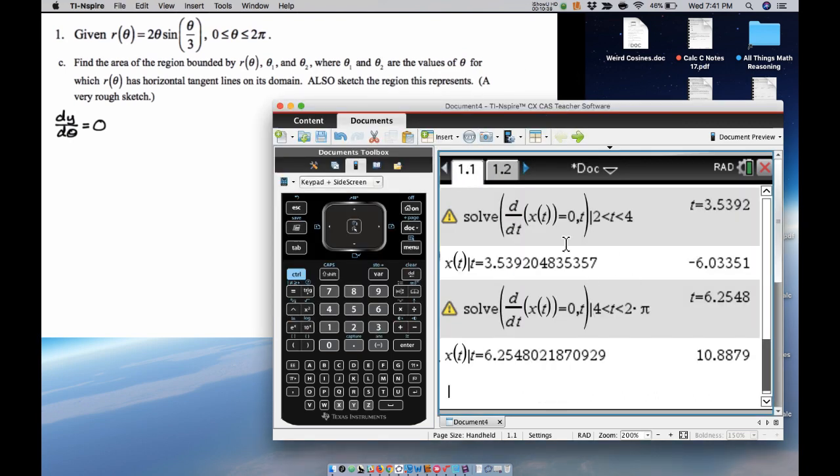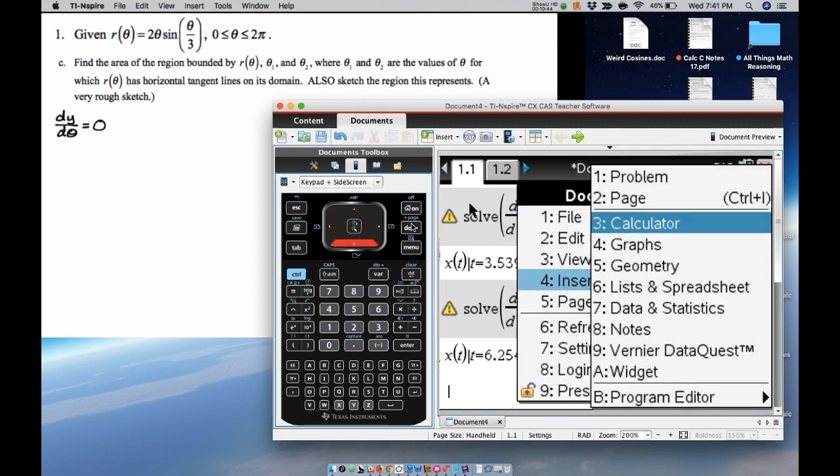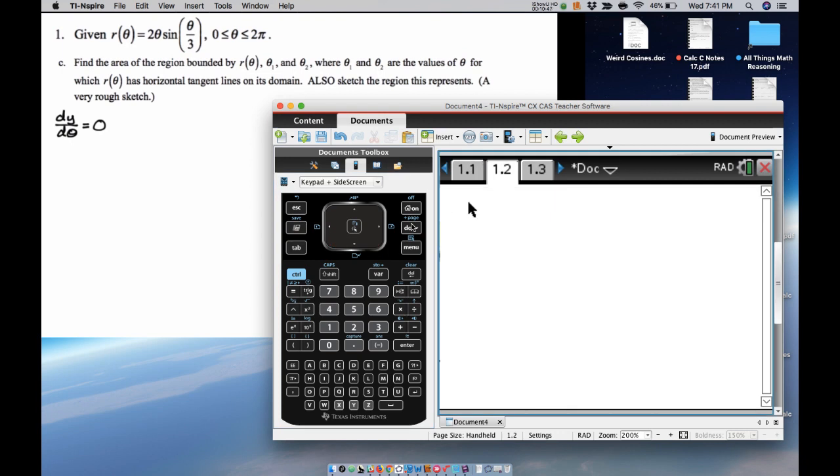And if dy/dθ equals 0, that's a calculator problem. So I'm going to go back here, and I'm going to add another calculator page. I want to solve, I want dy/dθ, so that's the derivative with respect to t of y(t). When does that equal 0? Solve for t, and then my interval is 0 < t < 2π. So let's see what we get. All right, we have that. So those are our values.